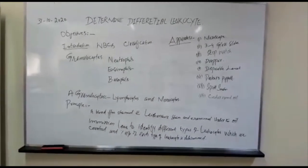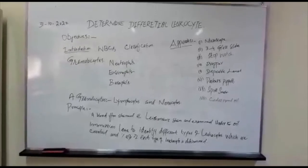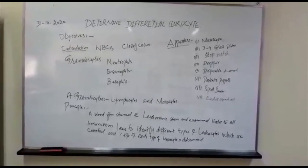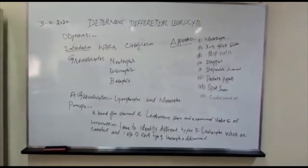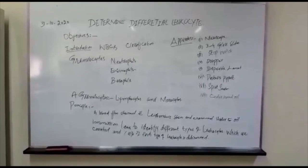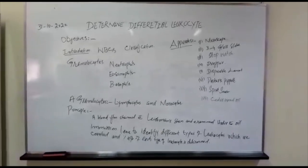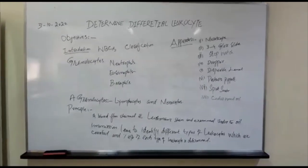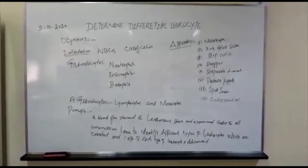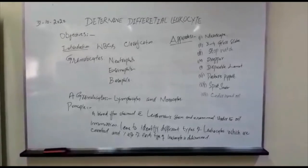WBCs are classified as granulocytes and agranulocytes. Granulocytes include neutrophils, eosinophils, and basophils, while agranulocytes include lymphocytes and monocytes. The principle: a blood film is stained with Leishman stain and examined under the oil immersion lens to identify different types of leucocytes, which are counted and the percentage of each type is determined.